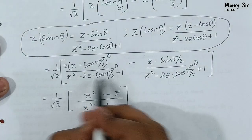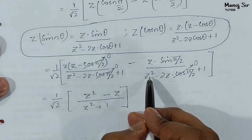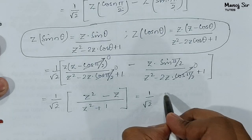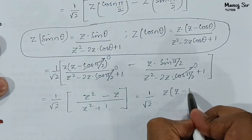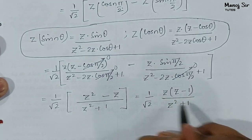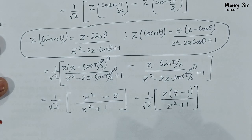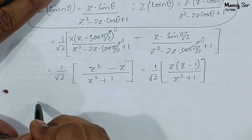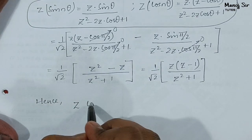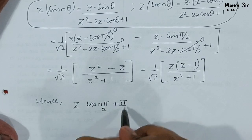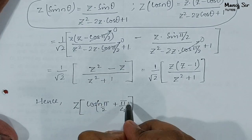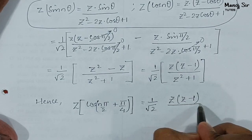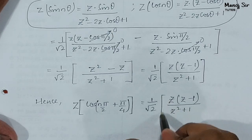Since the denominator is the same in both terms, we combine: 1/√2 · [Z²/(Z²+1) − Z/(Z²+1)] = 1/√2 · Z(Z−1)/(Z²+1). Taking Z common from the numerator, the final answer is Z{cos(nπ/2 + π/4)} = (1/√2) · Z(Z−1) / (Z²+1).